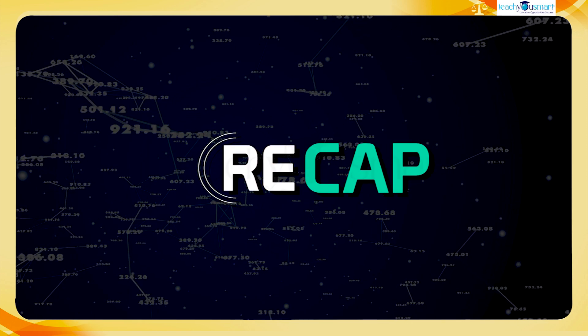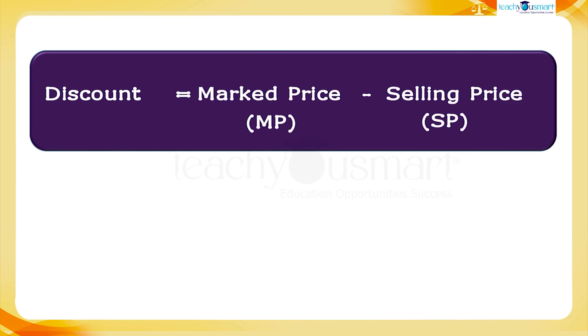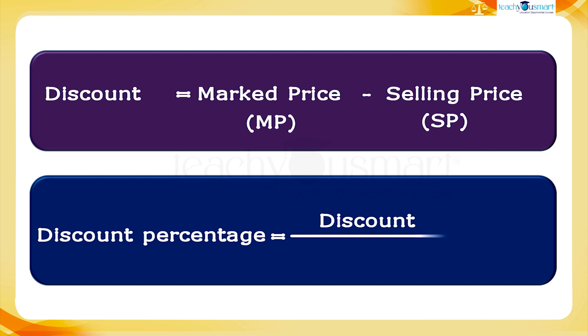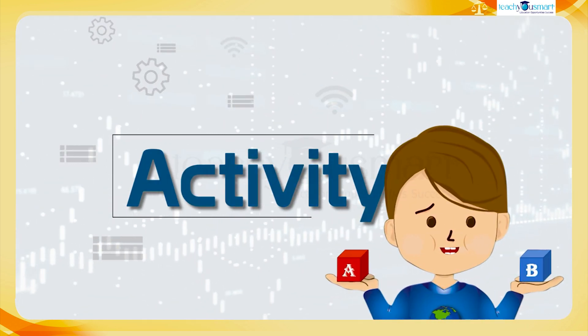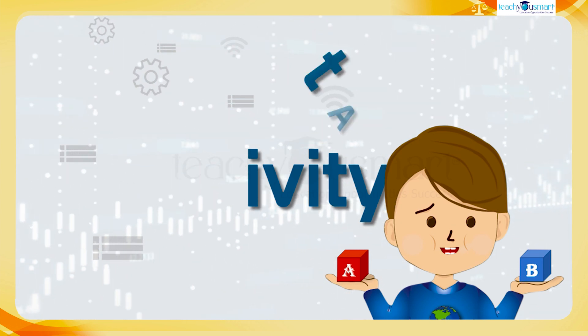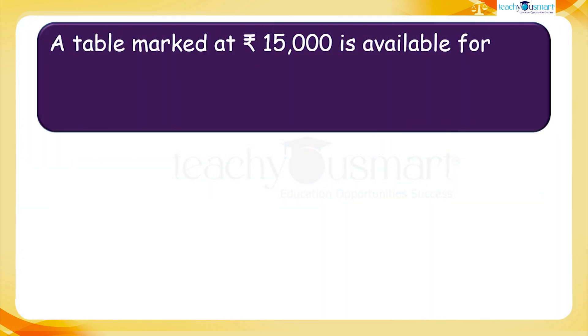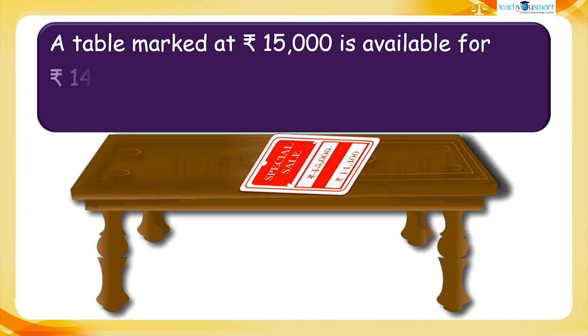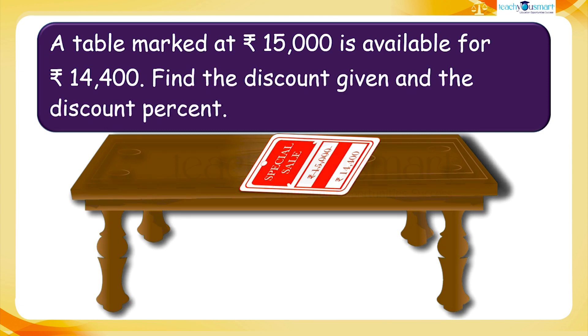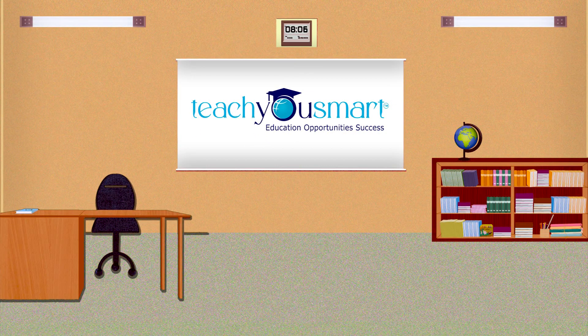Let's conclude. Today we discussed how to find discounts — discount and discount percent. Let's check how much you understood by doing an activity: A table marked at rupees 15,000 is available for rupees 14,400. Find the discount given and the discount percent. That's all for now — see you all in the next class with another interesting topic.